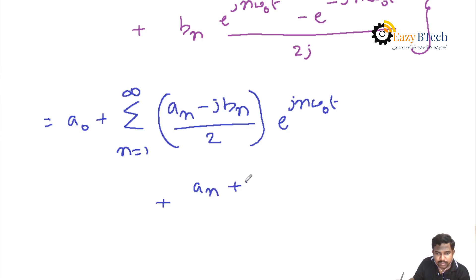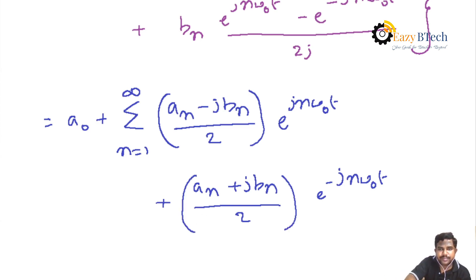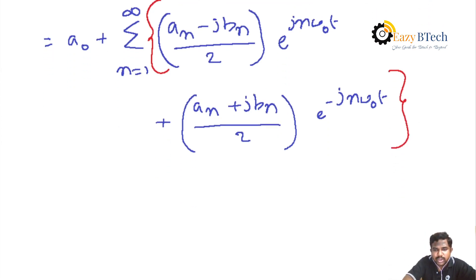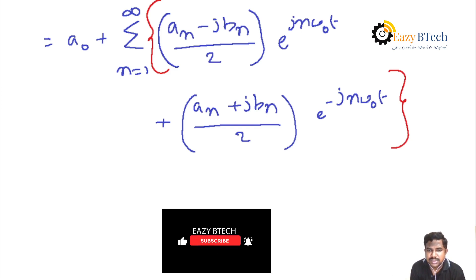The coefficient of e^(jnω₀t) is (an − jbn)/2, and since minus times minus gives plus, the coefficient of e^(−jnω₀t) is (an + jbn)/2. The sigma term is common for both functions.